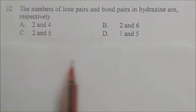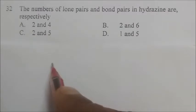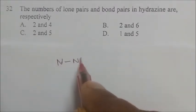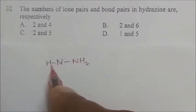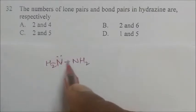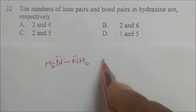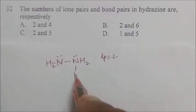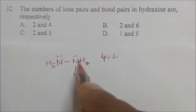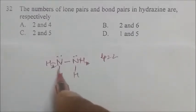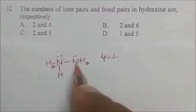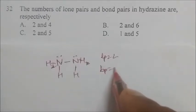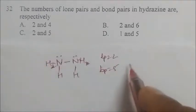The next question asks for the number of lone pairs and bond pairs in hydrazine (N2H4). In hydrazine, there are 2 lone pairs on the nitrogen atoms, and the bond pairs are: N-N bond plus four N-H bonds, giving 5 bond pairs total. The answer is C.